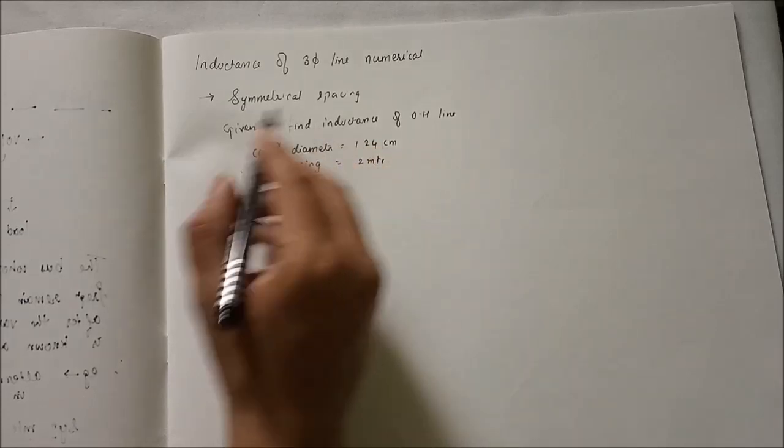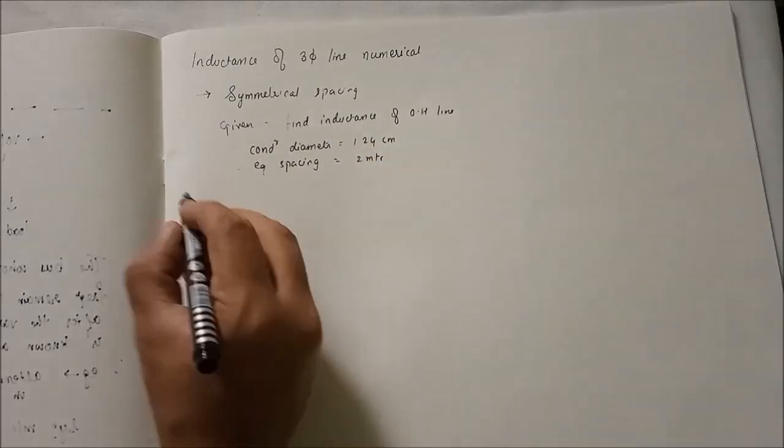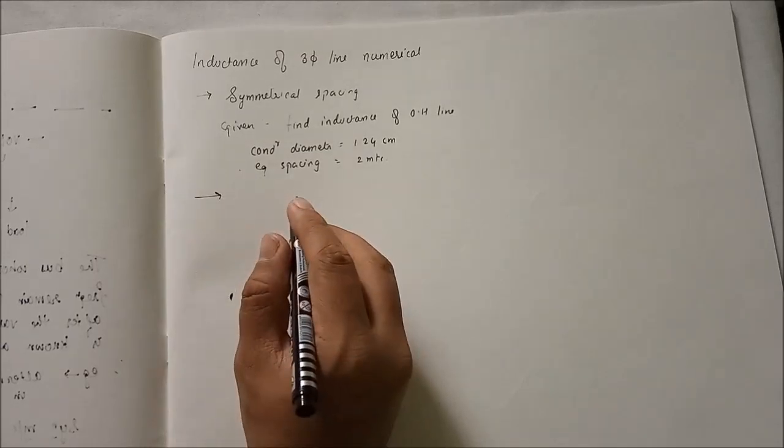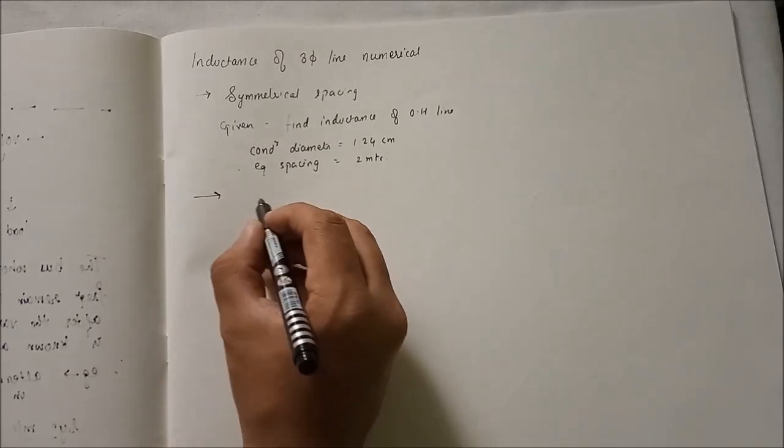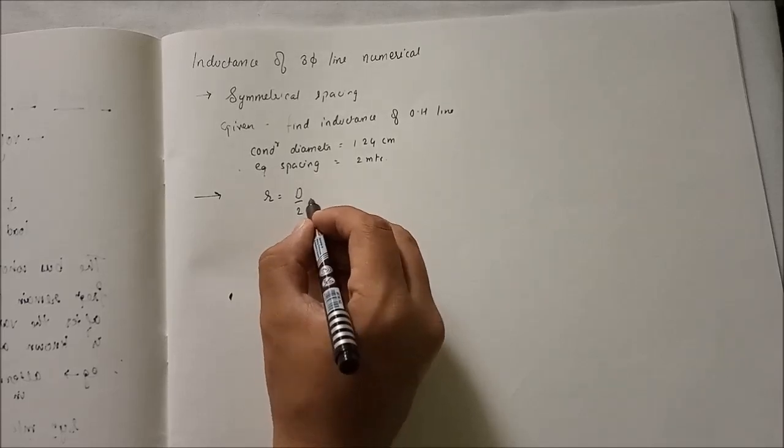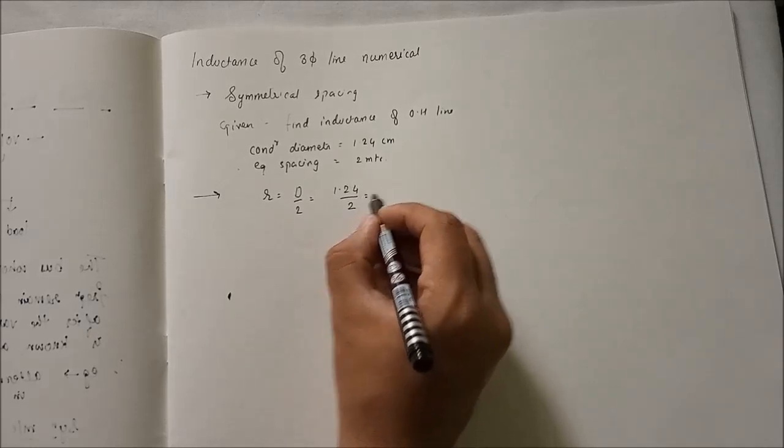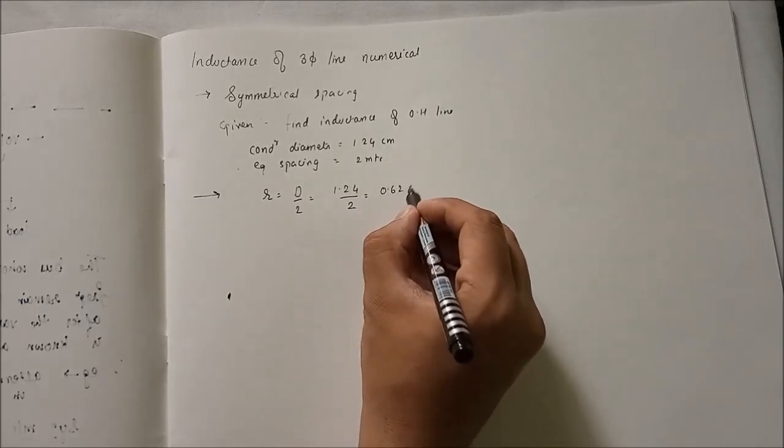So what we have to find? Inductance of an overhead transmission line. So first we will find out the radius. Radius is equal to diameter by 2, which is equal to 1.24 divided by 2, equal to 0.62 cm.